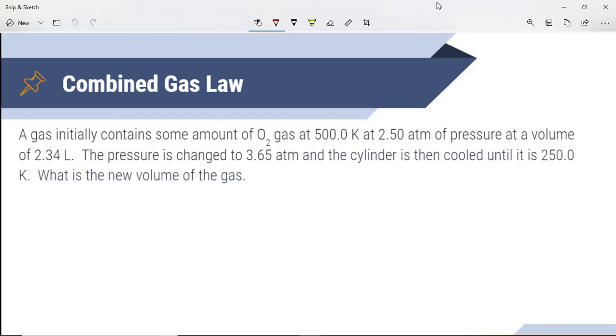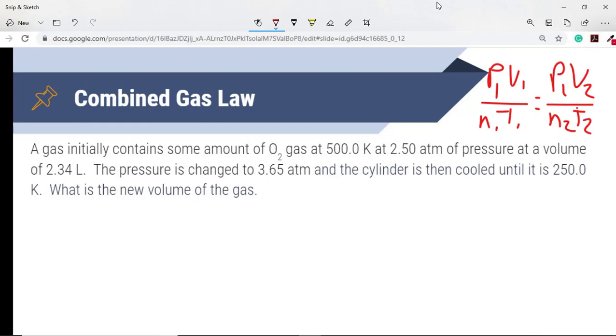Let's just do a brief practice problem to make sure that we have the idea down. We'll talk a little more about the calculations that are required here in just a moment. The gas initially contains some amount of oxygen gas at 500 Kelvin at 2.5 atm of pressure at a volume of 2.34 liters. The pressure is then changed to 3.65 atm and the cylinder is then cooled until it is 250 K. What is the new volume of the gas? Obviously we need to ask ourselves, does something change in this? And clearly it does—we have multiple things that change.